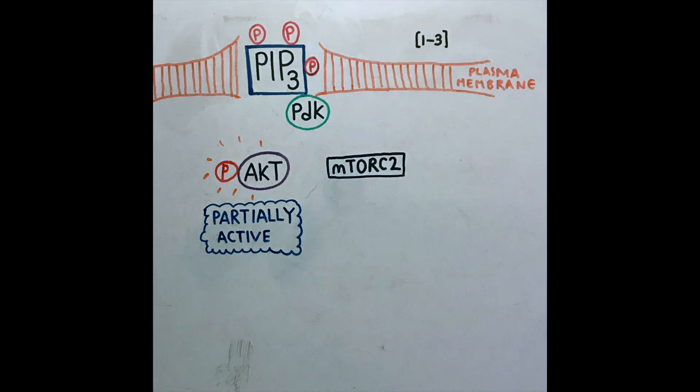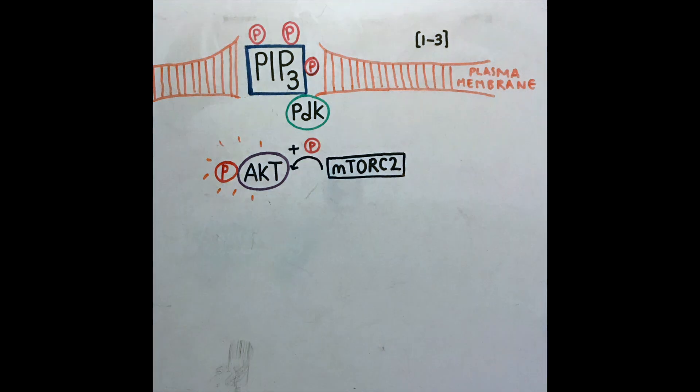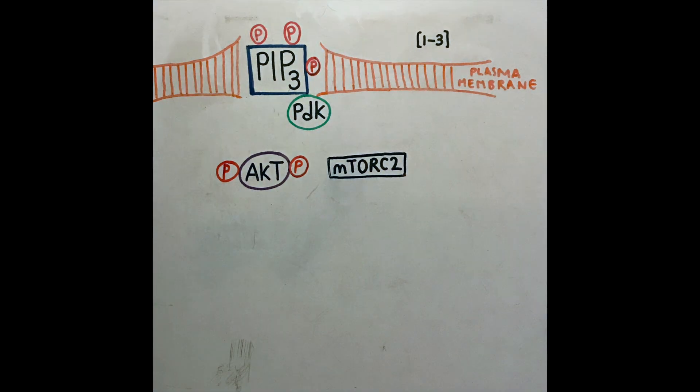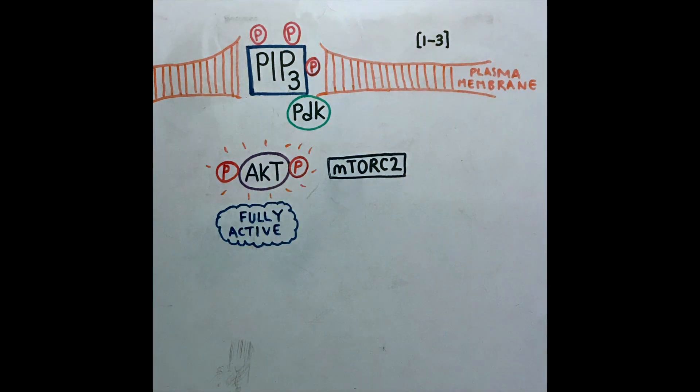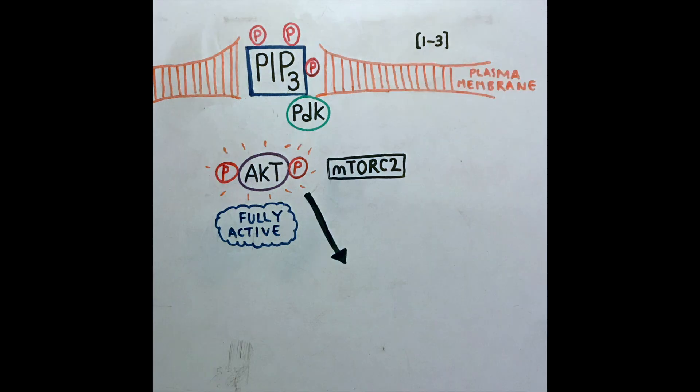MTORC2 then phosphorylates AKT at its second phosphorylation site, fully activating AKT. When AKT is active, it can phosphorylate many downstream targets, for example BAD.